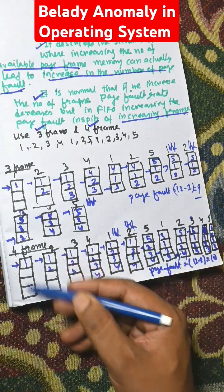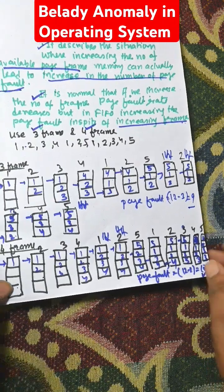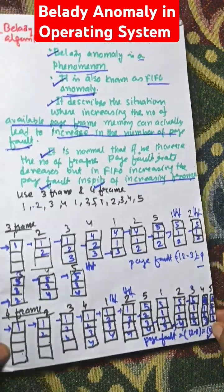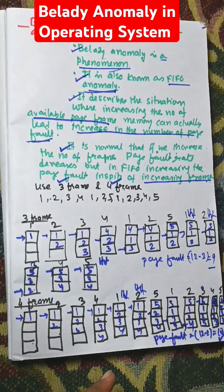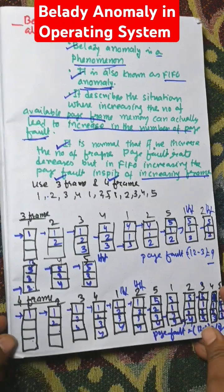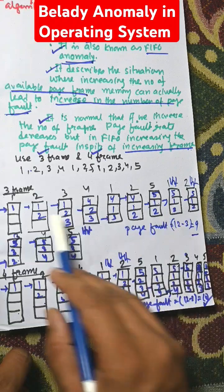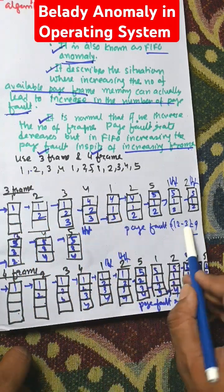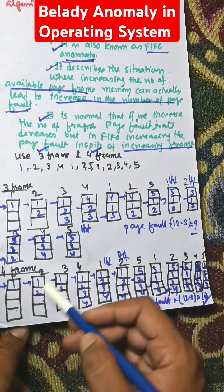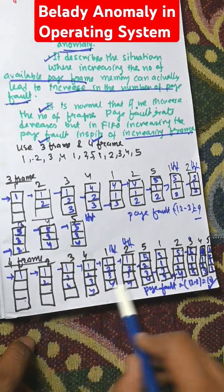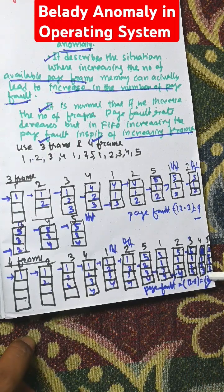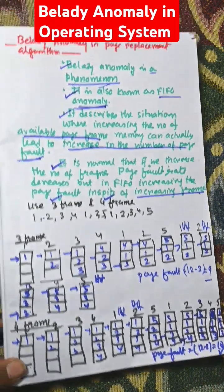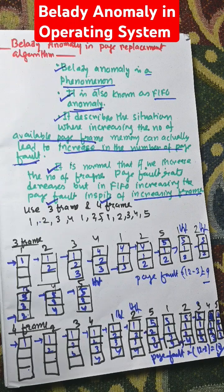So instead of decreasing when we increase the number of frames, the page fault count actually increases. This is known as Belady's anomaly. Belady's anomaly is the concept where if we increase the number of frames, page faults are expected to decrease — but here, page faults increase from 9 (with 3 frames) to 10 (with 4 frames). This is the concept of Belady's anomaly in the FIFO page replacement algorithm.